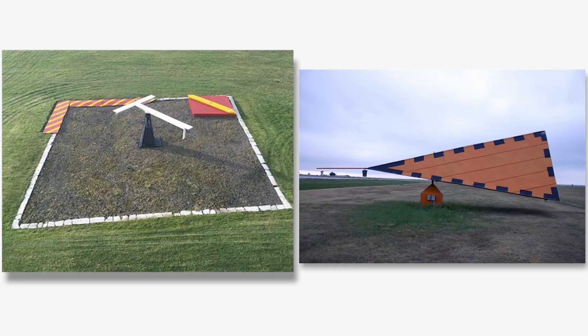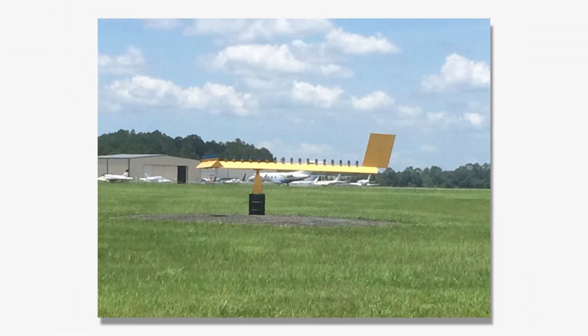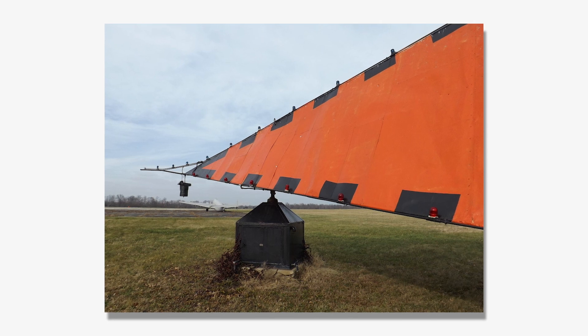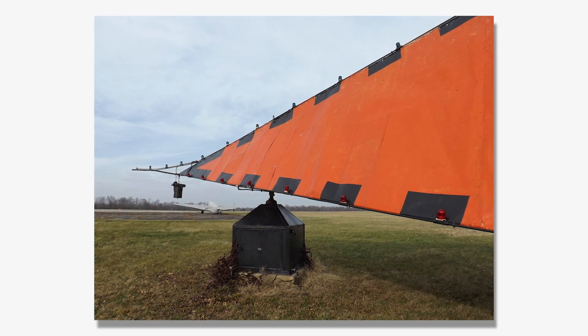Wind tees and tetrahedrons can swing freely and align themselves with the wind direction, but do not show the wind velocity. The tail of a wind tee will point in the direction the wind is blowing. The larger triangle of the tetrahedron points into the wind opposite of the wind direction.